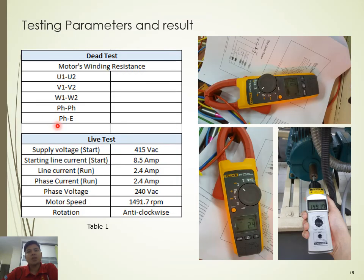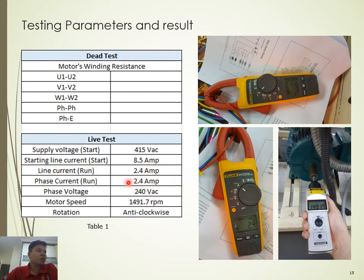The testing parameters and results: the supply voltage is 415V AC. The starting line current when powering up the motor is about 8.5 amperes. The line current during running is 2.4 amperes and the phase current is also 2.4 amperes — these are equal because the motor is running in star connection at that point. The phase voltage is 240V and the motor speed is approximately 1491.7 RPM; the rotation is anti-clockwise.